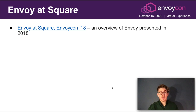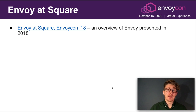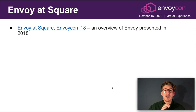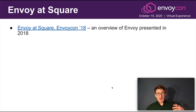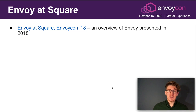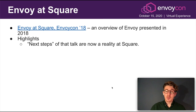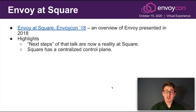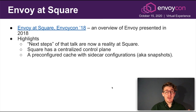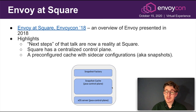There's a great talk that two of my colleagues gave at this exact same conference two years ago, and a lot of the things they talked about then are now a reality at Square. We're at the next level where now we can leverage our service mesh to build a lot of these new exciting features. Square has a centralized control plane with a pre-configured cache of sidecar configurations, also known as snapshots.